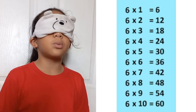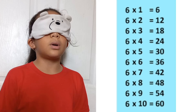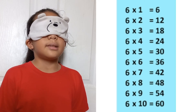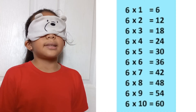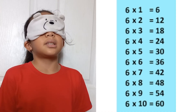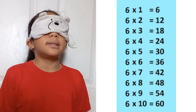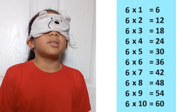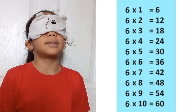6 times 1 equals 6. 6 times 2 equals 12. 6 times 3 equals 18. 6 times 4 equals 24. 6 times 5 equals 30. 6 times 6 equals 36. 6 times 7 equals 42. 6 times 8 equals 48. 6 times 9 equals 54. 6 times 10 equals 60.